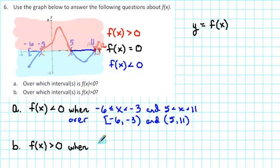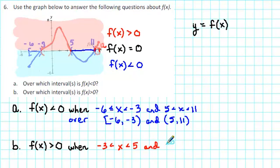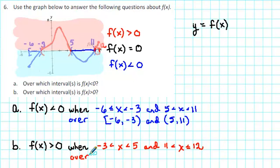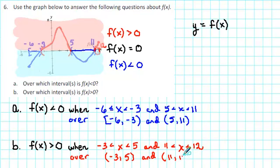So f of x is greater than 0 when x is between negative 3 and 5, and when x is between 11 and 12. In other words, f of x is greater than 0 over the intervals negative 3 to 5, and the interval 11 to 12.